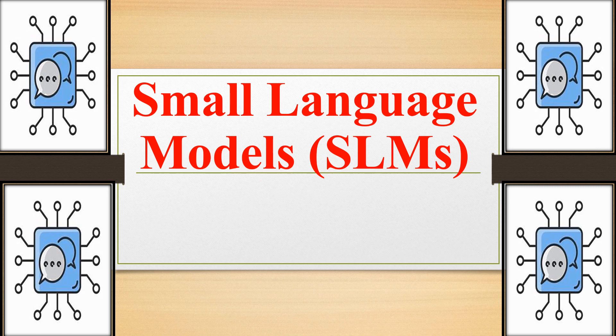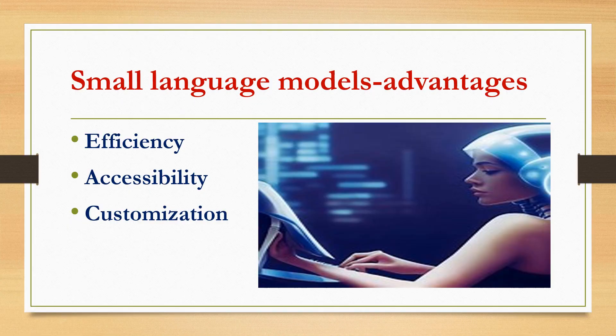So what are small language models? Small language models are essentially smaller versions of their LLM counterparts. They have significantly fewer parameters, typically ranging from a few million to a few billion, compared to LLMs with hundreds of billions or even trillions. This difference in size translates to several advantages.